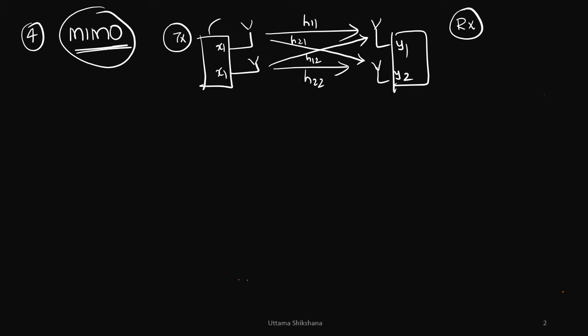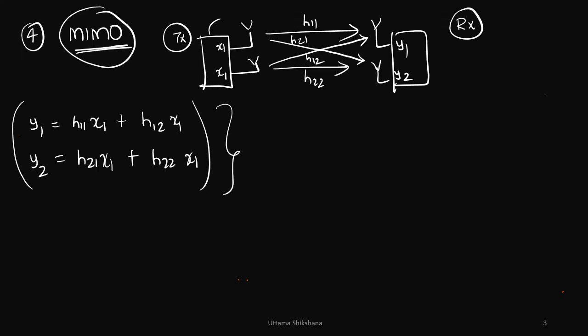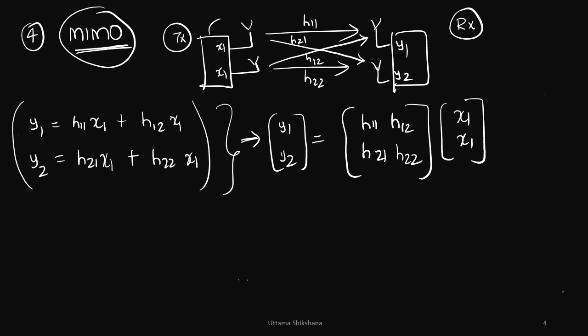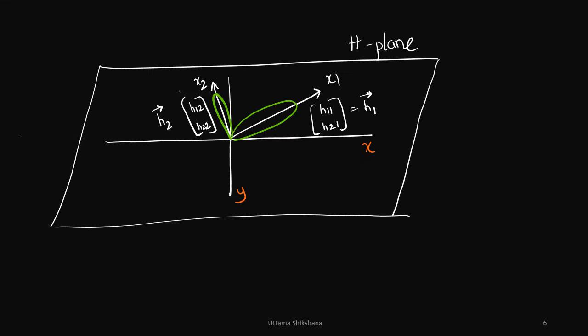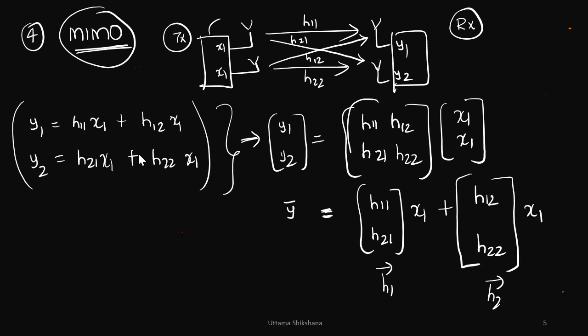So this is the MIMO configuration I had considered. I had only two transmit antennas and two receive antennas for the sake of simplicity. These are the links, and the equations at the receiver can be written as shown here, and in matrix form like this. Finally, we can write it in a simplified version where we derive the physical interpretation: along h1-bar vector we transmit x1, and along h2-bar vector we transmit x2, where h1-bar and h2-bar are the columns of the channel matrix H.